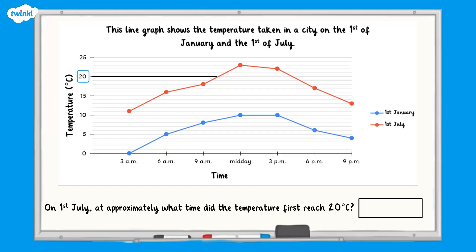This time we need to start by drawing a horizontal line from the 20 degrees to the point where it reaches the red line. Then we draw a vertical line down to the x-axis. The point where we meet the axis is about 1 third of the way between 9am and midday. So the temperature reached 20 degrees at approximately 10am.